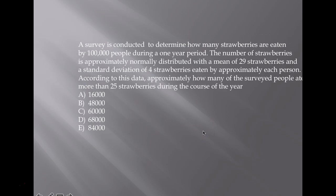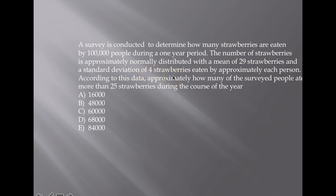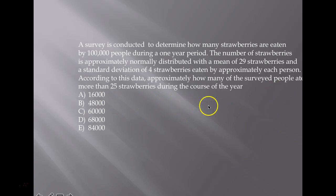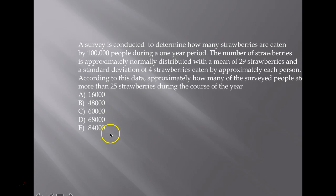Coming to the third question. A survey is conducted to determine how many strawberries are eaten by 100,000 people during a one-year period. The number of strawberries is approximately normally distributed with a mean of 29 and a standard deviation of 4 strawberries eaten per person. Approximately how many of the surveyed people ate more than 25 strawberries? Options: A: 16,000, B: 48,000, C: 60,000, D: 68,000, E: 84,000.